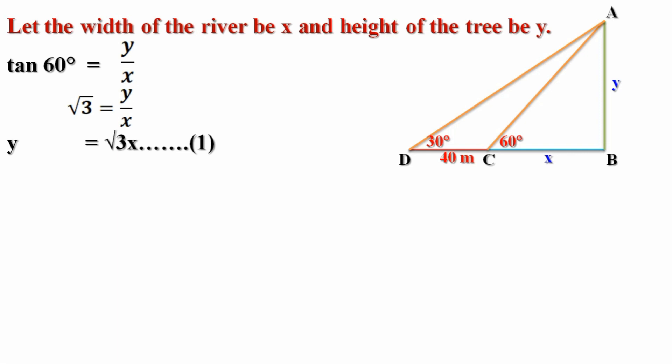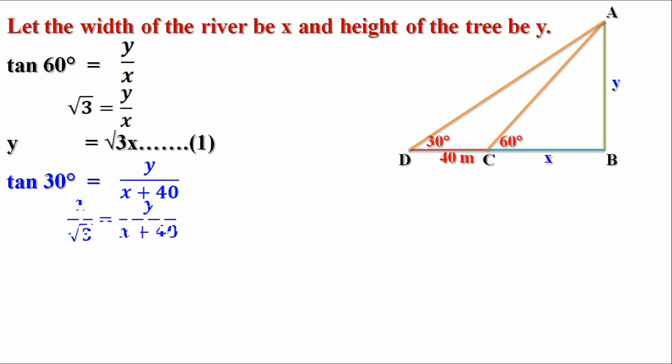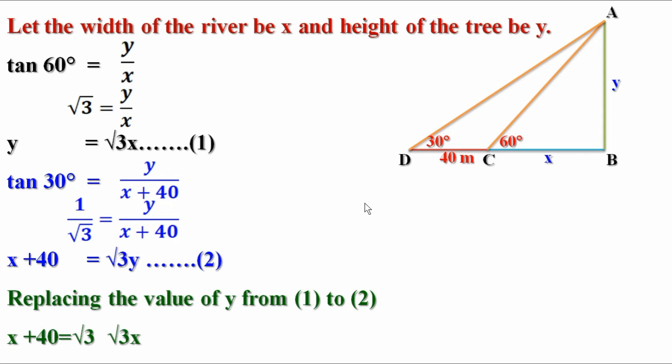Now consider the triangle ABD. Look at angle 30 degree. AB is the opposite side and BD is the adjacent side. Let us take tan30 equal to opposite side by adjacent side or AB by BD. AB equal to y and BD equal to x plus 40. The value of tan30 is 1 by root 3. So it can be written as 1 by root 3 equal to y by x plus 40. Cross multiplying, we will get x plus 40 equal to root 3 y.